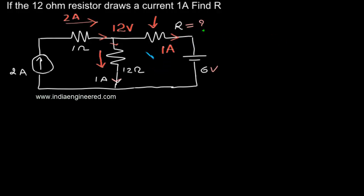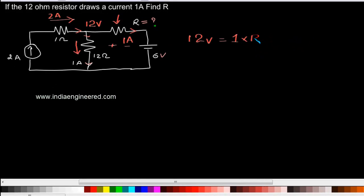This 1 ampere causes a voltage drop with this polarity across the resistor R. That means 12 volt is equal to 1 into R. That means this is the current into the resistor. That means the voltage across the resistor plus 6 volt. That means R is nothing but 6 ohms.